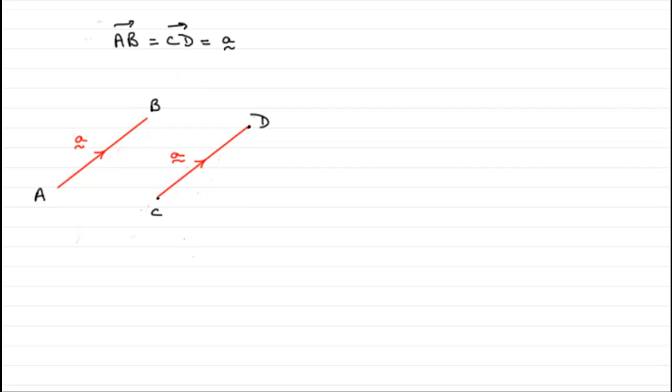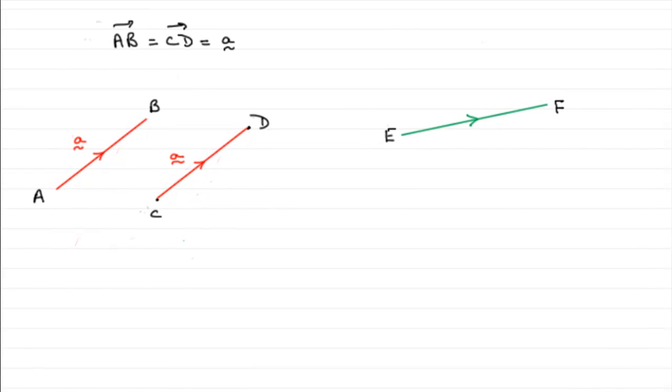Let's look at another property. Now suppose I had a vector, say E to F, and I took another vector which was parallel but going in the opposite direction and was exactly the same length. Then what I can say is that the vector EF is exactly the same as the vector minus FE. I'm reversing the direction, and this is the negative property of vectors.